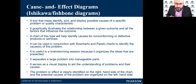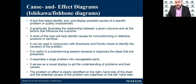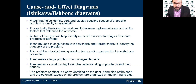It is useful in a brainstorming session because it organizes the ideas that are presented. In brainstorming, you collect ideas — you're not allowed to judge or critique or evaluate an idea; all you need is ideas. You sit with your team, collect the ideas, and then organize them. Like the affinity diagram, the fishbone diagram can also be used as a way to organize ideas from a brainstorming session.